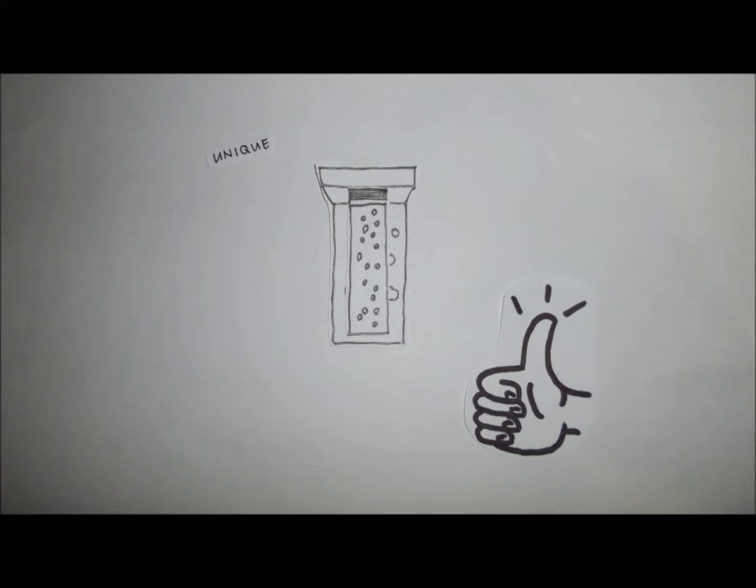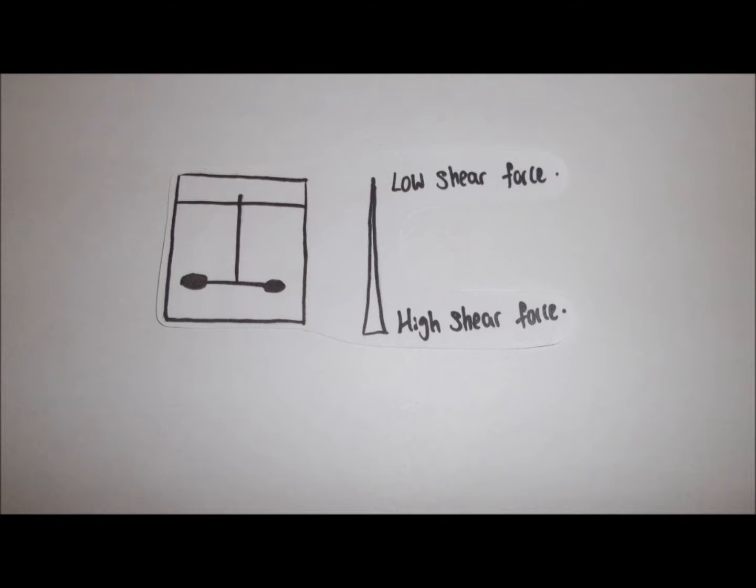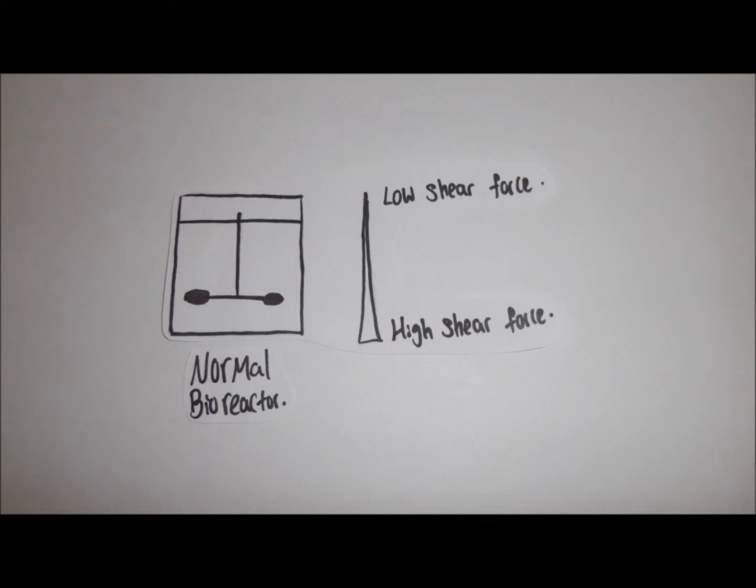Productivity of cells is also improved as the draft tube equalizes shear forces within the bioreactor compared to using stirred tank reactors. The airlift bioreactor allows both cells and growth media to be gently circulated without damaging them.